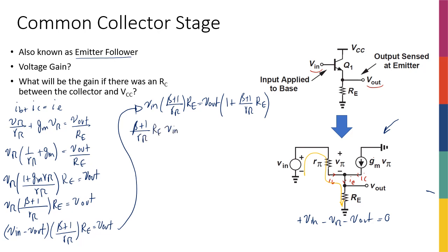So I'm going to have β+1 over Rπ times Re times Vin, so the left side is not touched. On the right side, I'm going to have Rπ plus β+1 Re over Rπ times Vout. Now I can cancel out Rπ times Vin, so Vout over Vin is going to be equal to β+1 Re over β+1 Re plus Rπ.